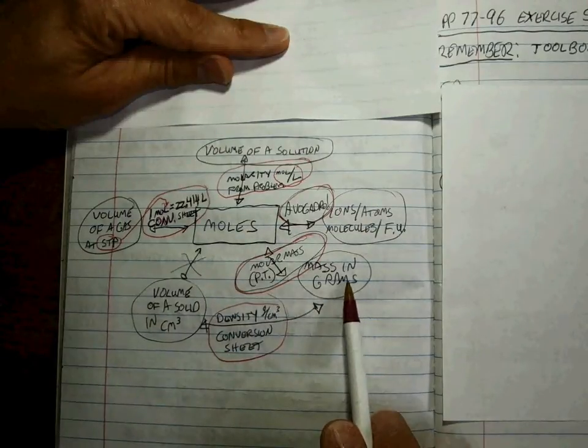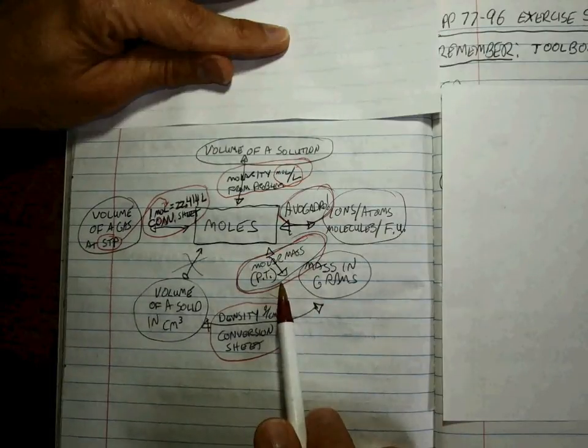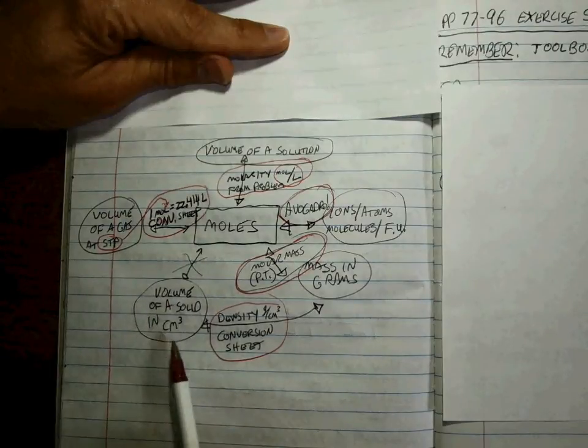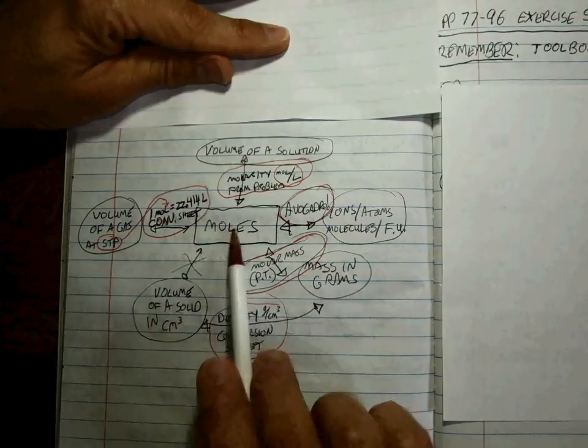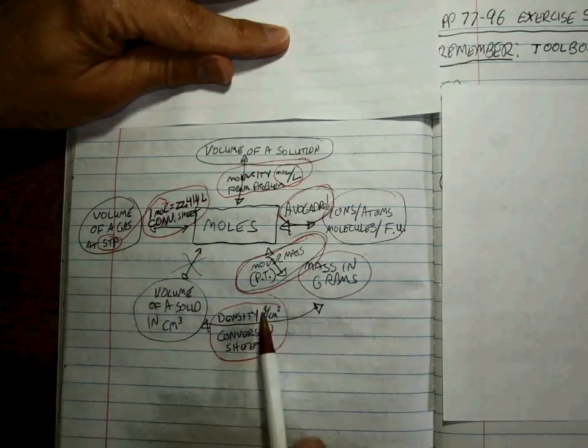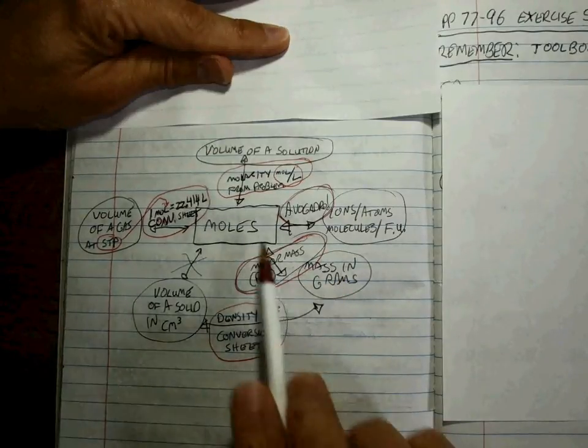Then we talked about volume of a solid in cubic centimeters. There was no direct way to get to moles, but we used the density in grams per cubic centimeter off the conversion sheet to get to the mass in grams, and then use the molar mass to get to moles.